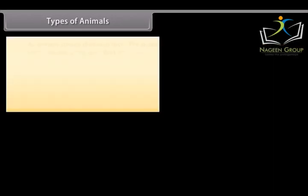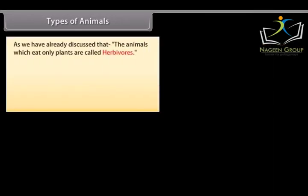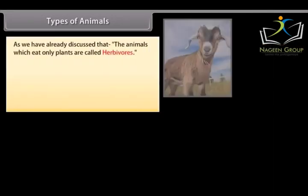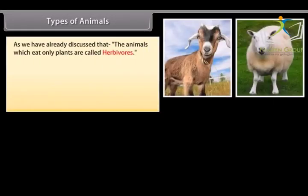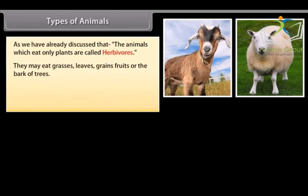Animals which eat only plants are called herbivores. They eat grasses, leaves, grains, fruits, or the bark of trees.